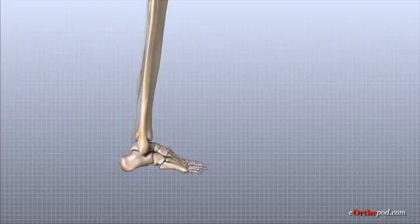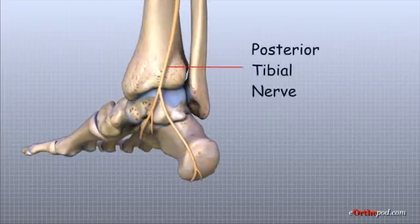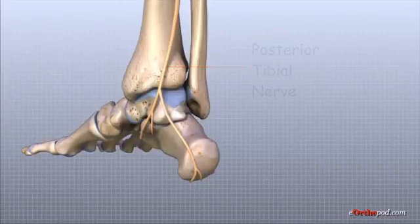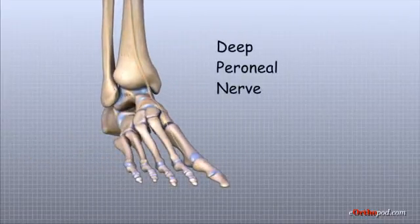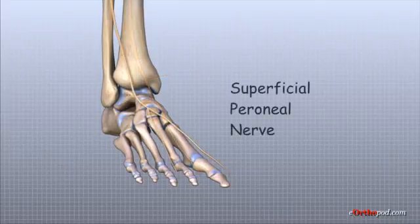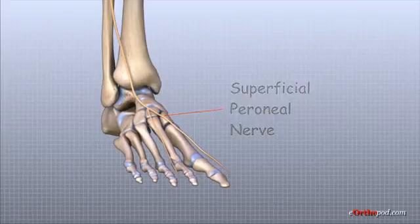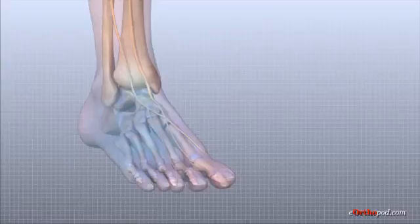The nerve supply of the ankle is from nerves that pass by the ankle on their way into the foot. The large posterior tibial nerve runs behind the medial malleolus and into the foot to control the muscles in the sole of the foot. The deep peroneal nerve crosses in front of the ankle on its way to the top of the foot. Multiple branches of the superficial peroneal nerve cross along the outer edge of the ankle, controlling muscles in this area and giving sensation to the top and outside edge of the foot.